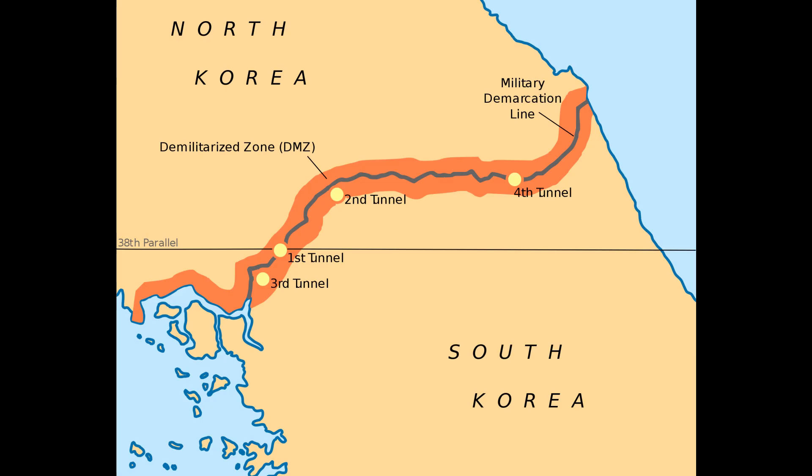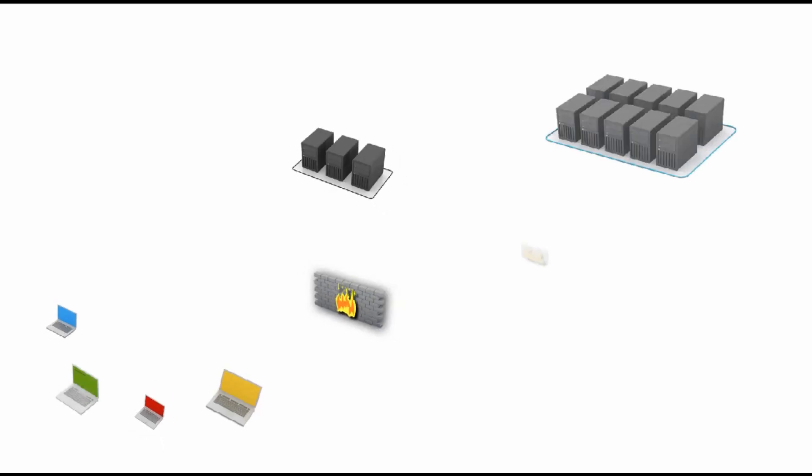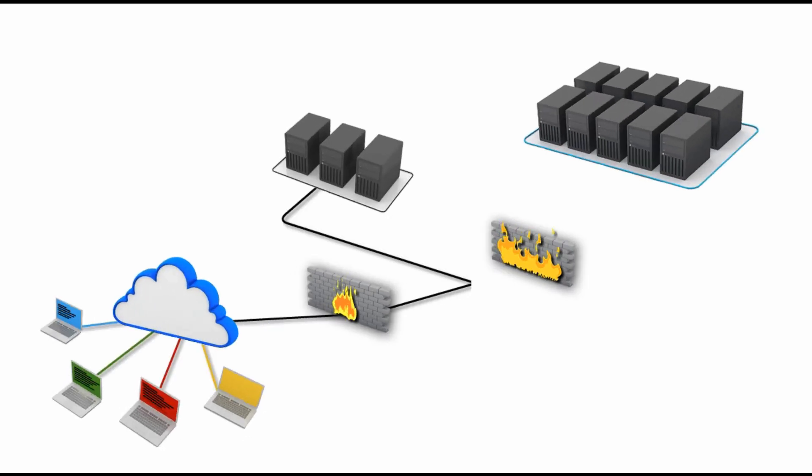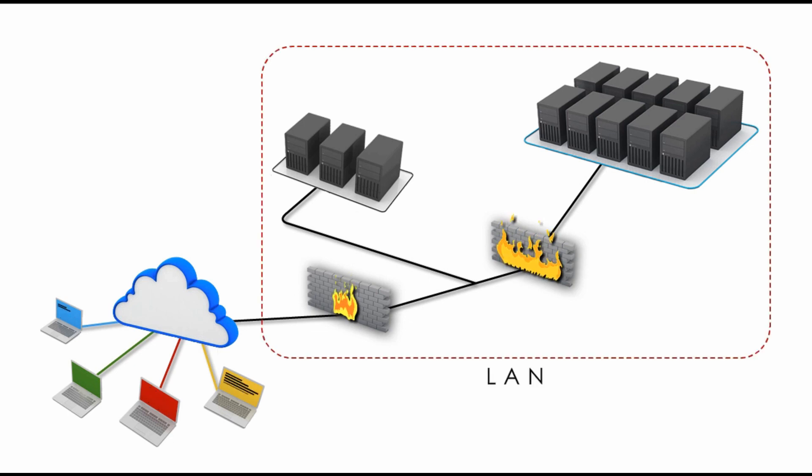When the Korean War ended in 1953, a ceasefire agreement was signed and DMZ was created. According to this agreement, within this buffer zone, no military troops, no weapons are deployed. In the networking world, DMZ is a lightly protected network.